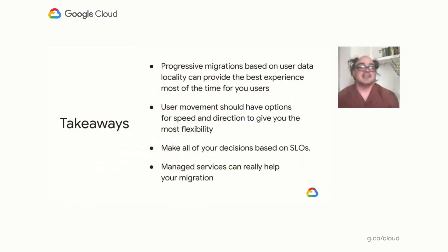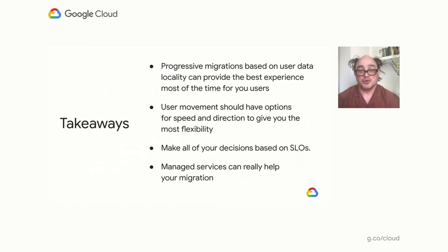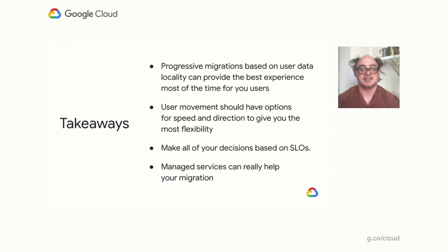So what are the takeaways from this process? Progressive migrations based on user data locality can provide the best user experience most of the time. If you have a sharded monolith, you probably have some sort of user sharding, and if you can do it little by little, that's going to be the best bang for your buck. Your movement should have options — both speed and direction — which gives you flexibility for when things go wrong or go really well. Decide what 'really well' means based on your SLOs. We also found that this was our first opportunity, having been in our own colo, to use managed services and really see the benefit of them. Now that we're in Google Cloud Platform, we think there are many more opportunities for that. Thank you very much for your time, and I hope your migration goes well as well.